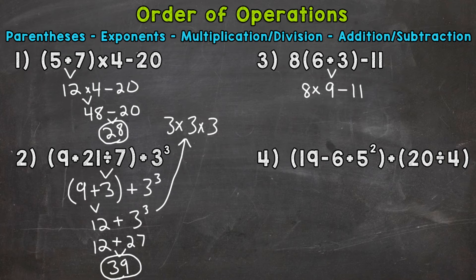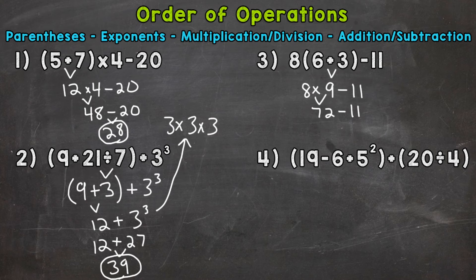Minus 11. Make sure you use some type of symbol between the 8 and the 9 to indicate multiplication — you can't just drop the 8 down right next to the 9 because you would have 89. Do we have any parentheses left? No. Any exponents? No. Any multiplication or division? Yes. So that's what we do next. 8 times 9 is 72 minus 11. Bring down that subtraction and the 11. We're only left with subtraction, so that's where we end. 72 minus 11 gives us 61.